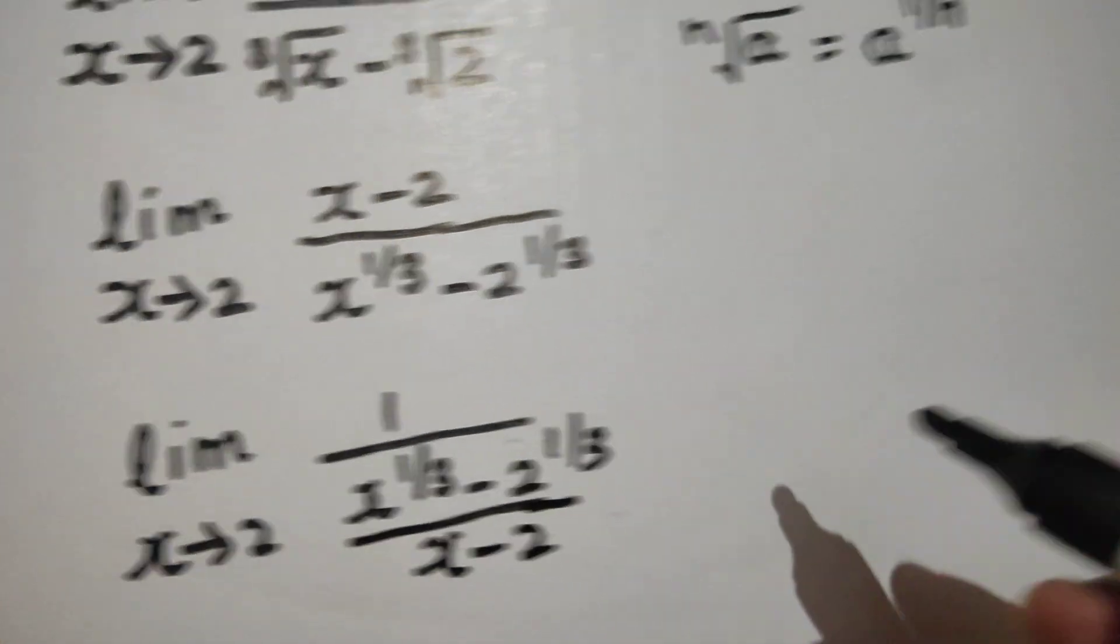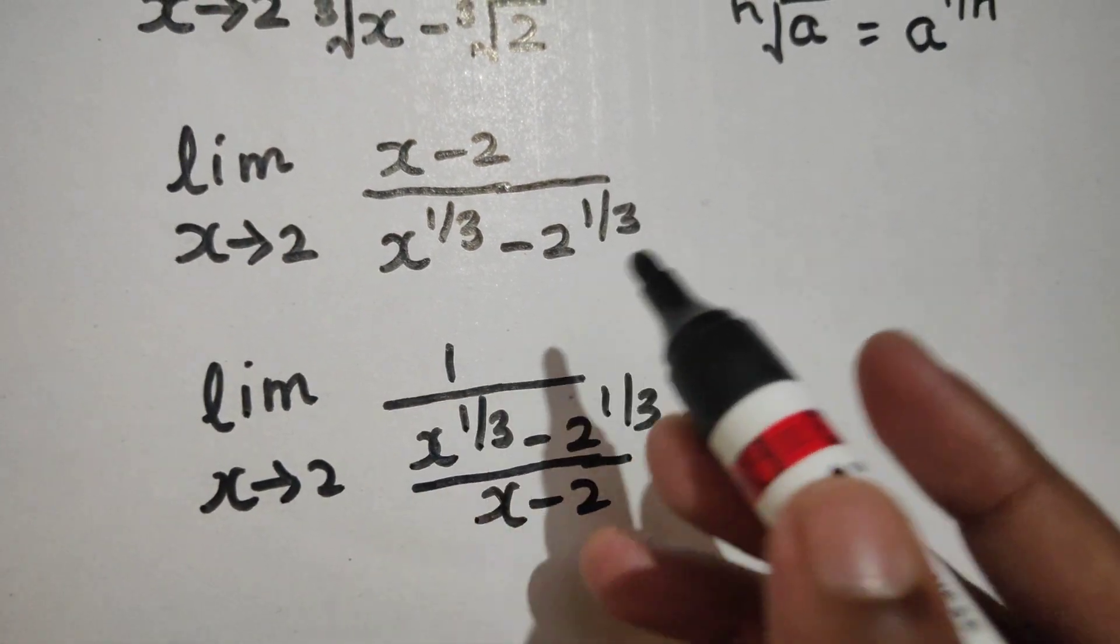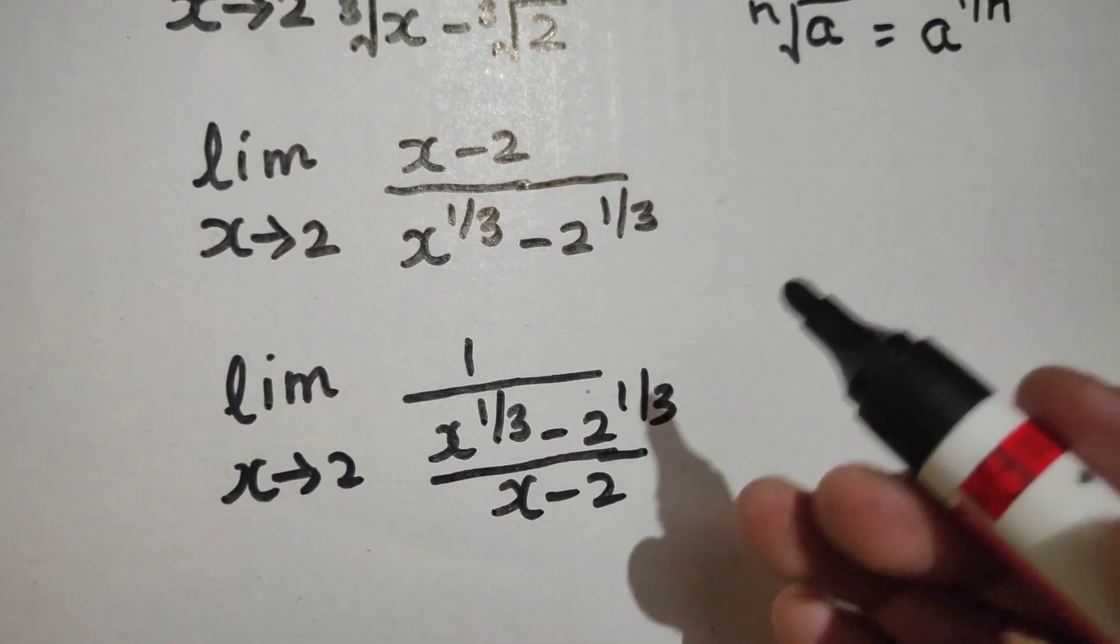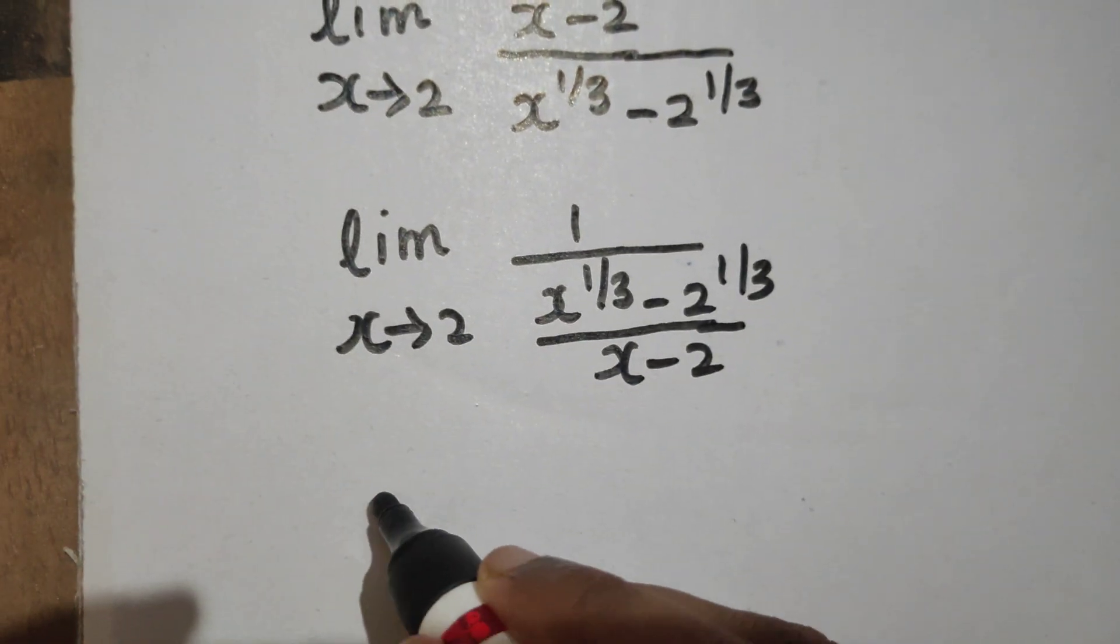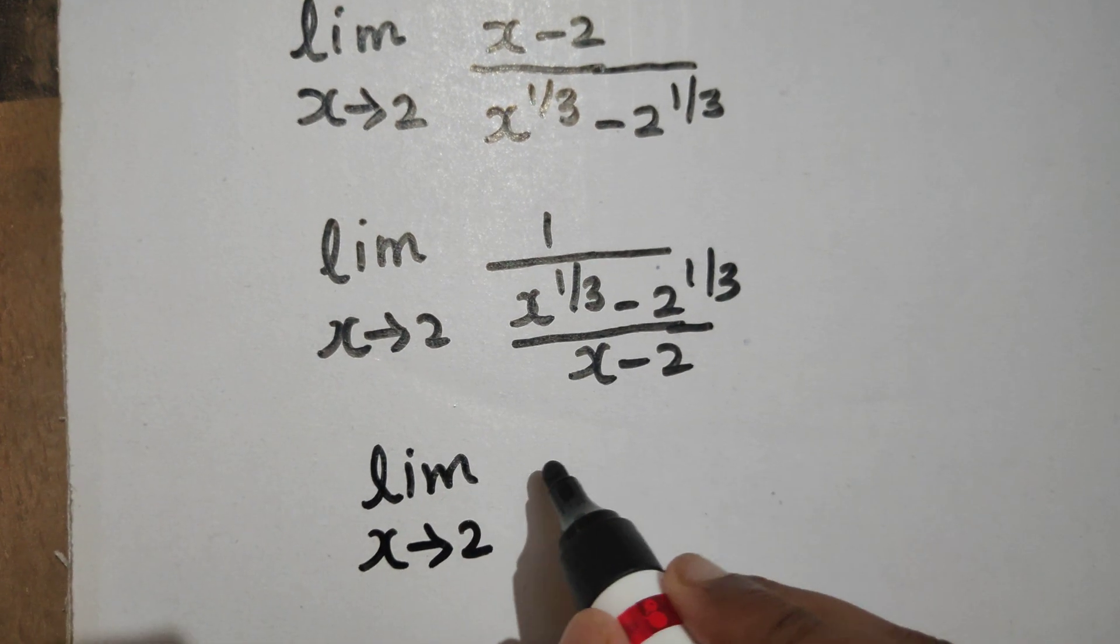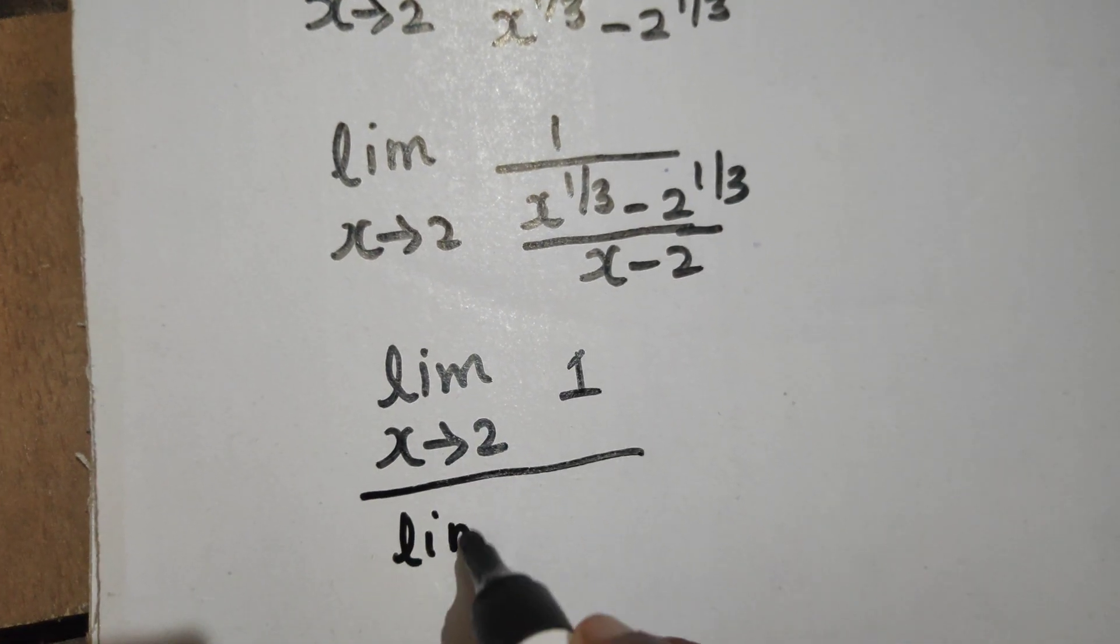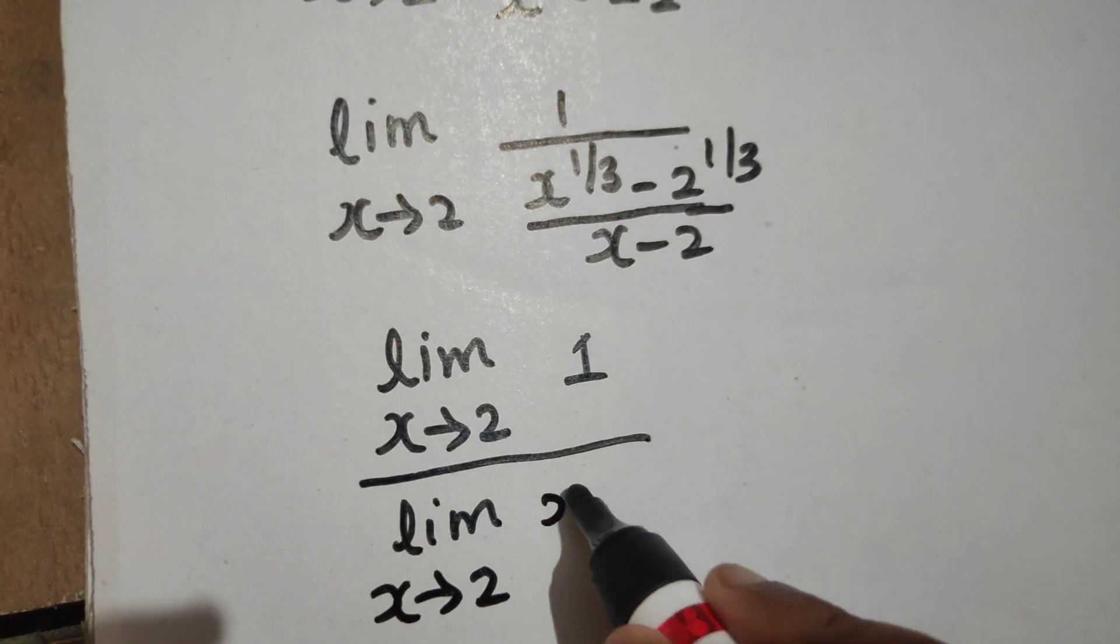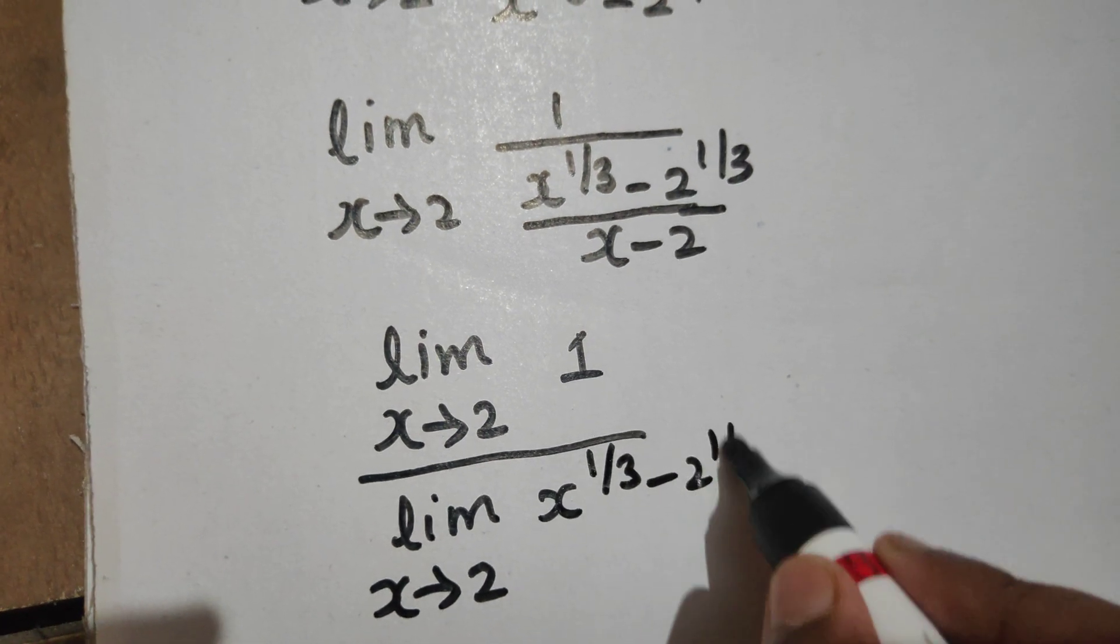And you know algebra of limits: if limit is on a numerator divided by denominator, then I can apply the limit on both numerator and denominator. So this will be limit x tending to 2 of 1, divided by limit x tending to 2 of x power 1/3 minus 2 power 1/3 divided by x minus 2.